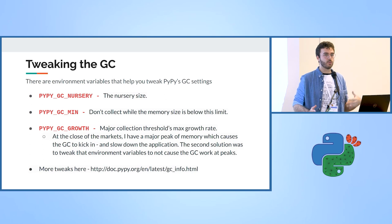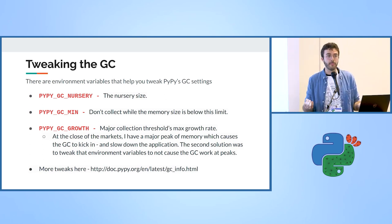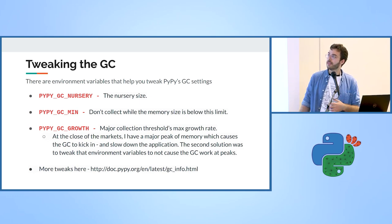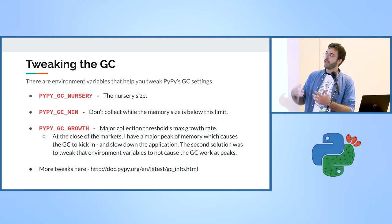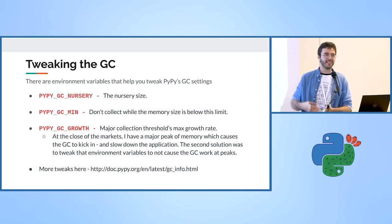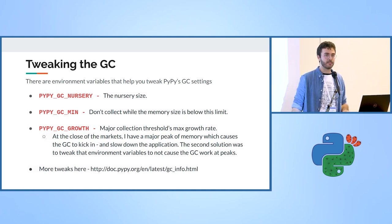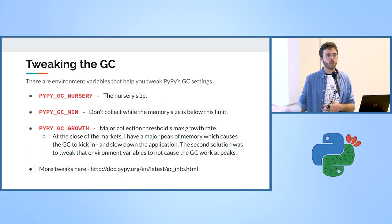I tried tweaking the garbage collection in PyPy using environment variables: the nursery size (default 4 MB) — I increased it a bit and it helped. I set the garbage collector minimum threshold so that if memory is under 5 gigabytes, don't collect at all. And I set the growth parameter so that at peaks, when you create a lot of memory, don't do garbage collection.